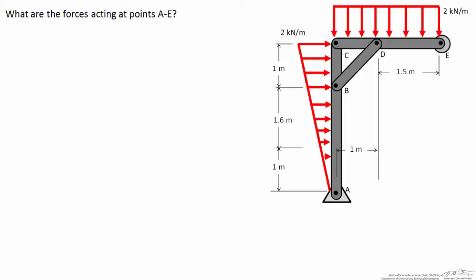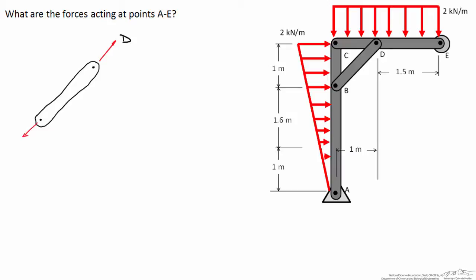To solve this problem let's begin by drawing free body diagrams — we'll need three total — but let's start with the two-force member BD. Point B is in the lower left, point D is in the upper right. Assuming this two-force member is under tension, force D acts to the upper right and force B acts to the lower left. Because it's a two-force member, the forces have to be equal and opposite, so D equals B. That gives us two unknowns and one equation already.